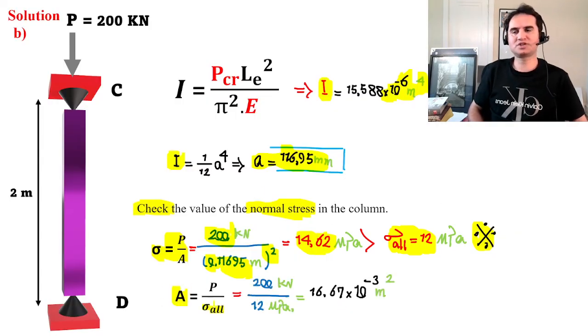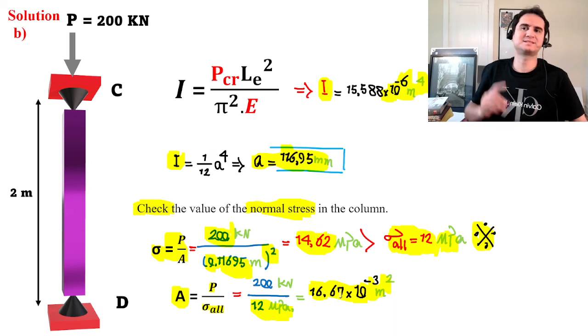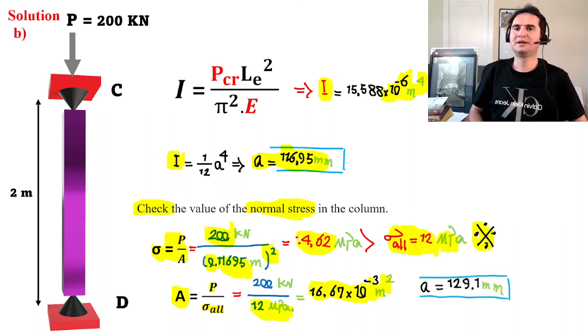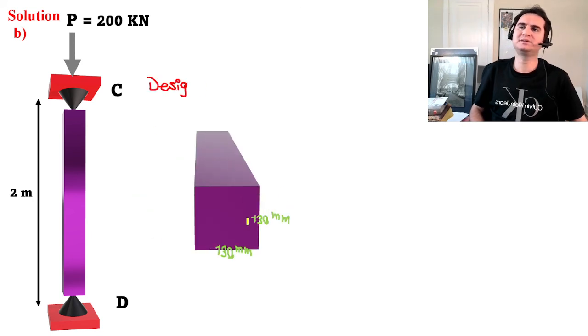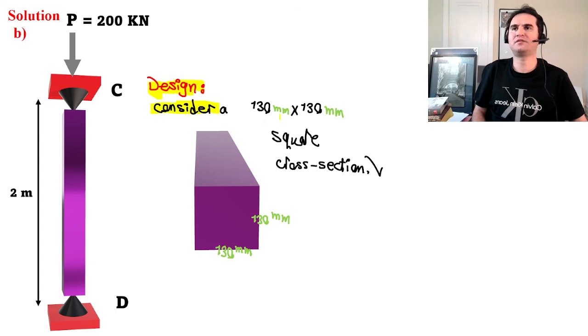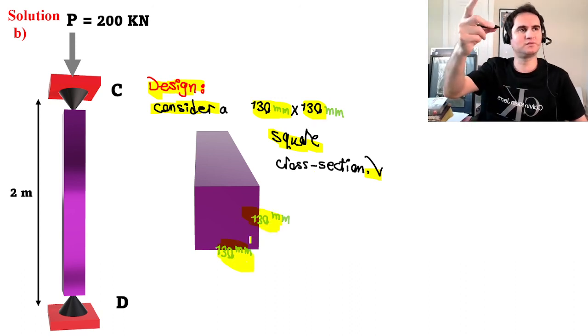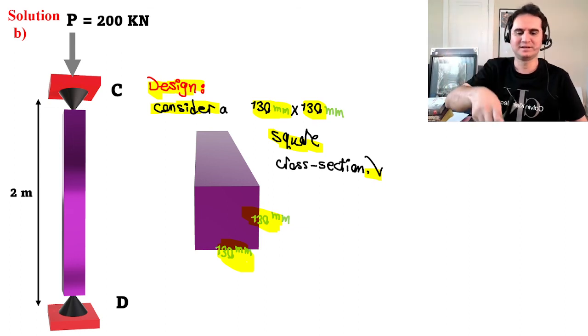So what to do? We need to design the section based on—we can calculate the area this time based on our limiting factor. That factor is 12 megapascals, which gives us this much of area. If the buckling criteria is not sufficient enough, we need to go by the cross-section which allowable stress gives us: 16.67×10⁻³ meter squared. That gives us a new dimension which is almost 130 millimeters. You can consider a design of 130 millimeters by 130 millimeters square, and that's acceptable because the limiting factor is allowable at the denominator, so we do not need to check it anymore.